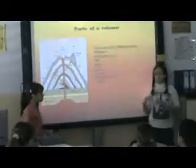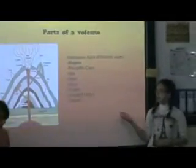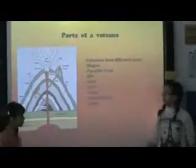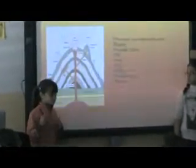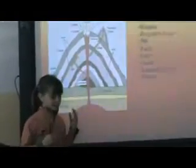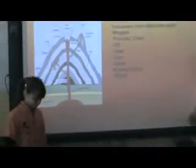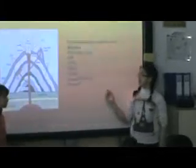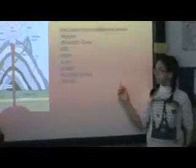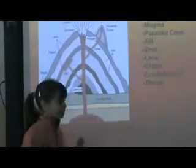And what is a parasitic cone? Parasitic cone is a small cone-shaped volcano formed by an accumulation of volcanic debris. And what is a seal? Seal is a black piece of magma formed when magma hardens in a plug in a chimney. And the vent is an opening in the earth through which volcanic materials escape.